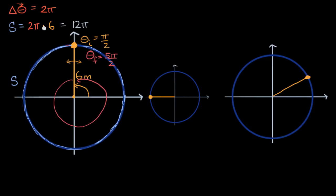What's interesting here is that to figure out the distance traveled — the arc length — it looks like what we did is take the magnitude of our angular displacement (the absolute value of it) and multiply it by the radius r. So arc length s equals the magnitude of delta theta times r.